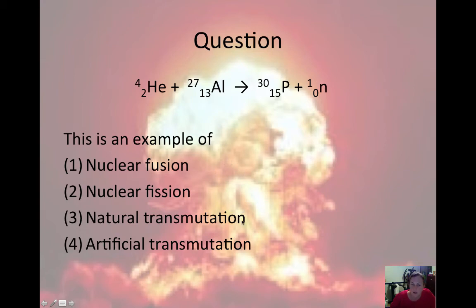And then natural transmutation is just describing alpha, beta, and positron decay. Artificial transmutation is describing when you have artificially causing a reaction to occur by adding something in on the reactant side of the equation.